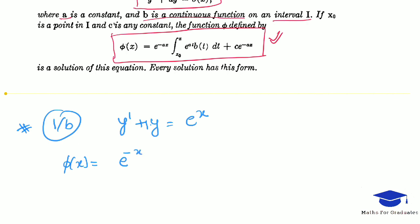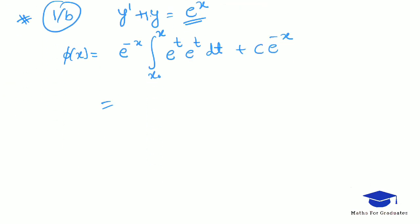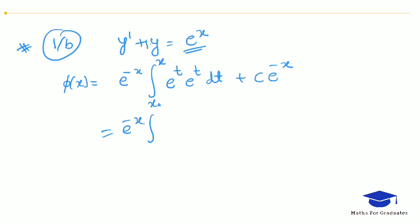The integrand is e^t · b(t), and since b(x) = e^x, b(t) = e^t. So we have e^(−x) times the integral from x₀ to x of e^t · e^t dt, which is e^(2t) dt, plus c·e^(−x).